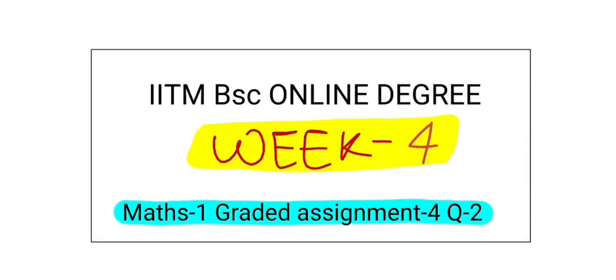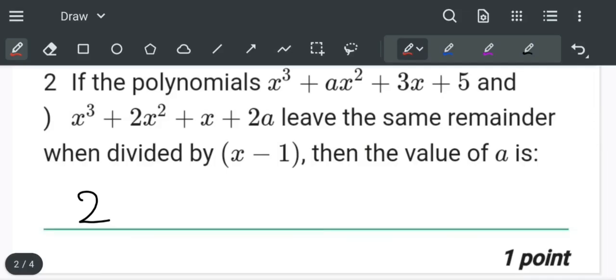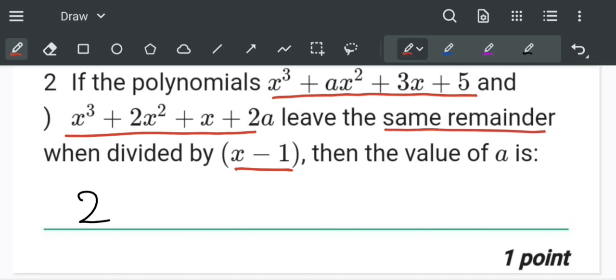Hello everyone, in this video we are going to start Week 4 of our online degree Mathematics 1, graded assignment number 4, question number 2. In this question we are given two cubic equations which on dividing by x minus 1 leave the same remainder. So we'll divide both one by one by x minus 1 and equate the final remainders.